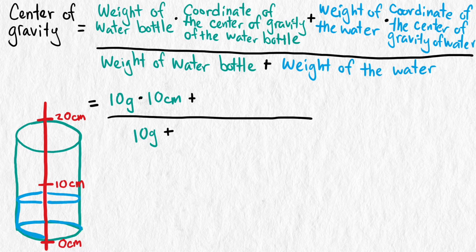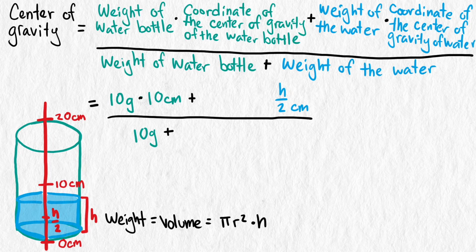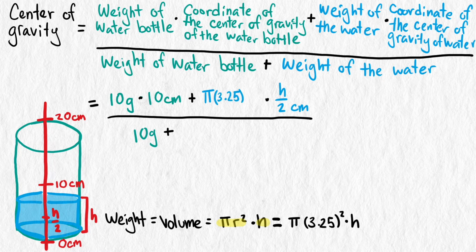The coordinate for the center of gravity of the water is halfway up the height of the water. We're going to let the height of the water vary, so we're going to call it h, so the coordinate is h divided by 2. The weight of the water is the volume of the water, and we can use the formula for the volume of a cylinder to calculate the volume. It's the area of the circular base times the height. We know the radius, so we can plug it into this formula. Now we have the function defined. It gives out the center of gravity of the bottle and water system, given the height of the water.